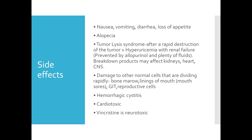Side effects of chemotherapy include nausea, vomiting, diarrhea, loss of appetite, and alopecia. Tumor lysis syndrome usually occurs after rapid destruction of the tumor, leading to hyperuricemia and then renal failure. This can be prevented with allopurinol, which helps in excretion of uric acid, and adequate fluid intake. Breakdown products may also affect the kidney, heart, and CNS. Damage may also occur to other rapidly dividing normal cells such as bone marrow, linings of the mouth, and GI reproductive cells. Hemorrhagic cystitis may develop, and some drugs are cardiotoxic — vincristine is neurotoxic.